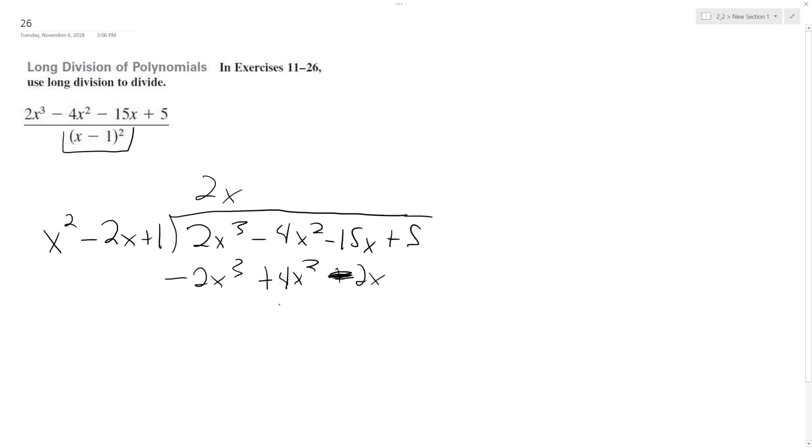So it ends up being plus 2x. Change of signs, this becomes minus 2x. So this becomes 0, 0, and we get negative 17x on the bottom plus 5.